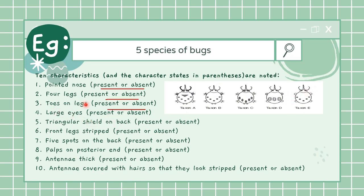Then toes on legs - this is not present in all of them. A, B and C have toes on their legs - if you see these small hair-like structures are their toes - whereas D and E don't have it. Fifth one, triangular shield on the back - it's evident that only A has it and no other species has it.